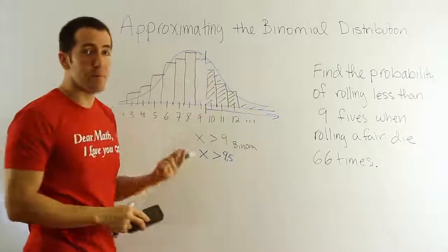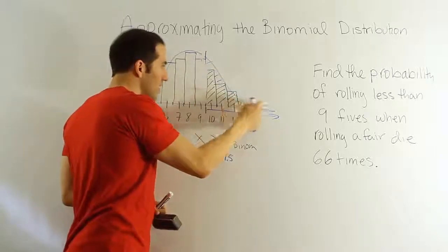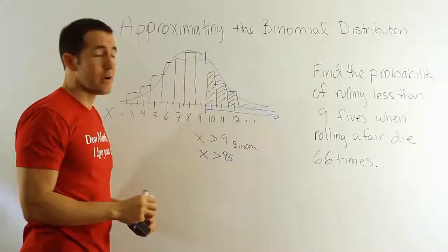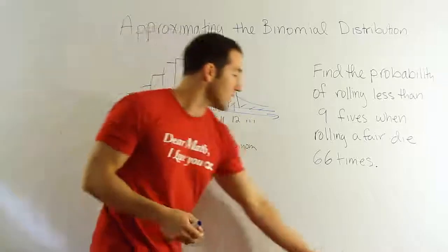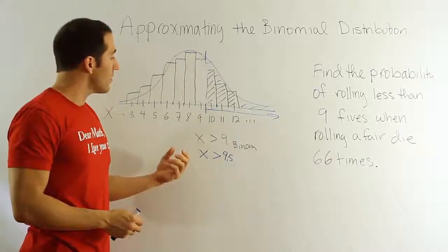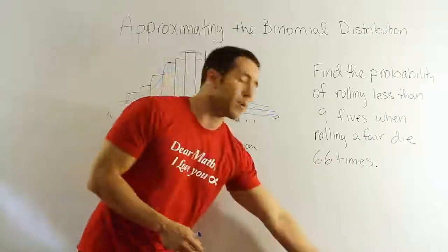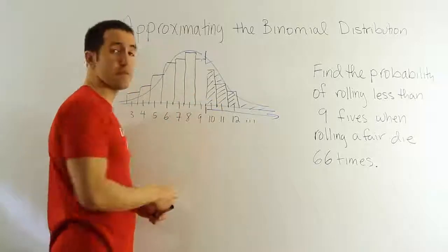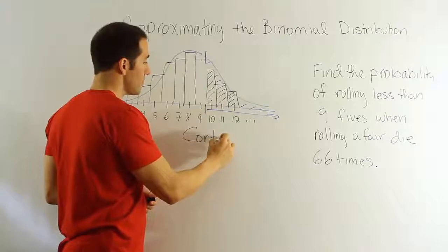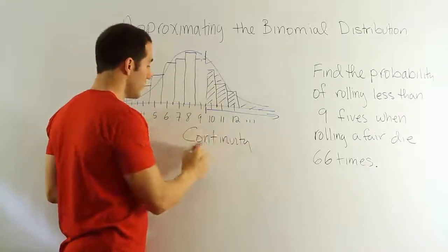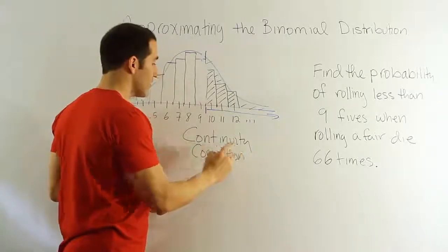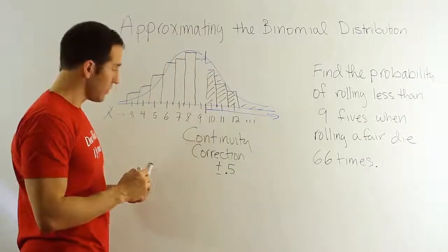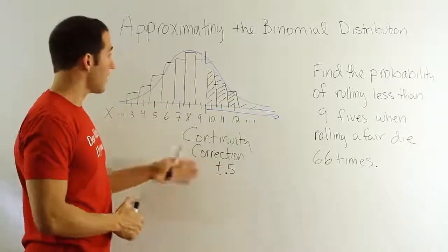This fix improves the approximation, though some small error remains where there's white space between the bell curve and rectangles. The key adjustment is called continuity correction. It accounts for the fact that the bell curve is continuous while the binomial curve is discrete. In practice, it means adding or subtracting 0.5 from your x value to ensure you're capturing exactly the right probability region.